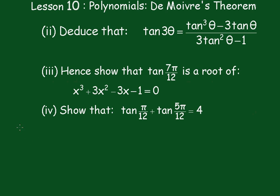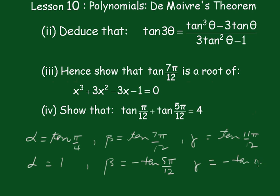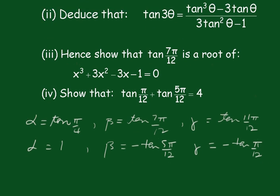Call them: α = tan(π/4), β = tan(7π/12), and γ = tan(11π/12). Now tan(π/4) = 1. β in the second quadrant equals −tan(5π/12), and γ also in the second quadrant equals −tan(π/12).